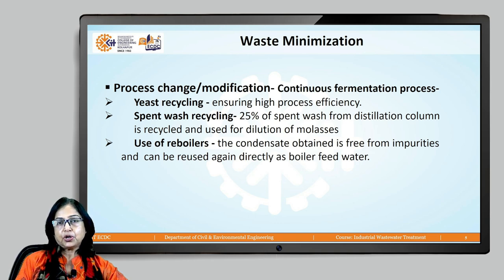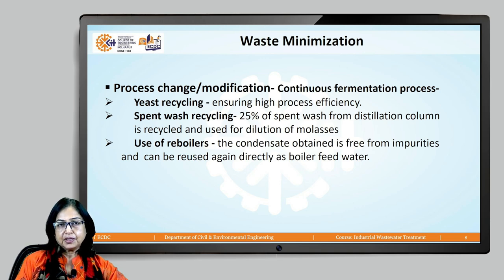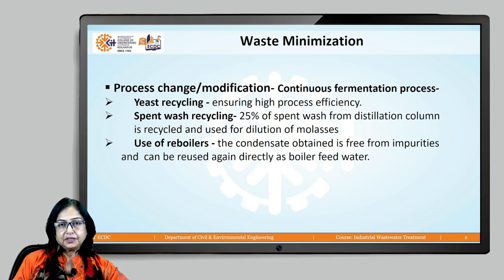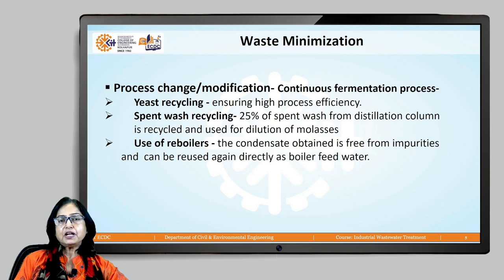Number one: process change or process modification. Continuous fermentation process results in less quantity of spent wash, so rather than batch processing, continuous fermentation should be favored. Then, instead of preparing fresh culture for yeast every time, the yeast which is separated after fermentation — which is already mature and active — can be recycled for fermentation of the next batch rather than using freshly cultivated culture.